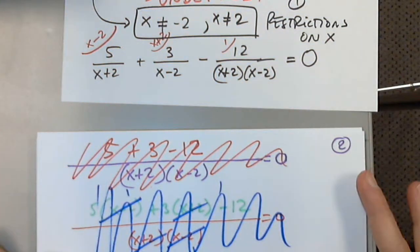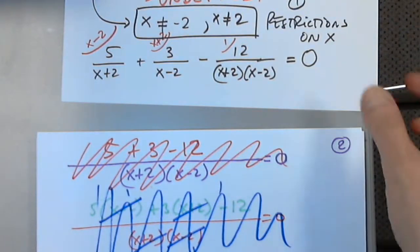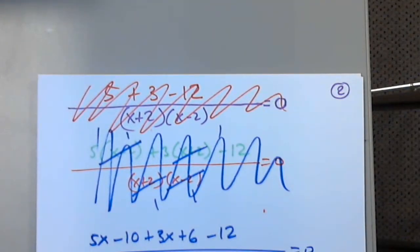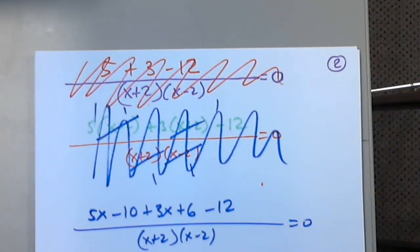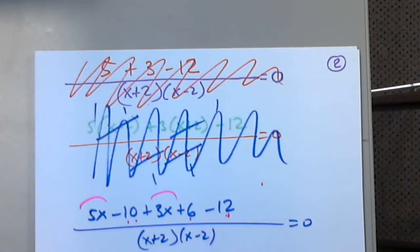From distributing I get 5x minus 10 plus 3x plus 6 minus 12 equals 0. Combining like terms: 5x plus 3x is 8x, and negative 10 plus 6 minus 12 is negative 16. So 8x minus 16 equals 0 over (x plus 2)(x minus 2).